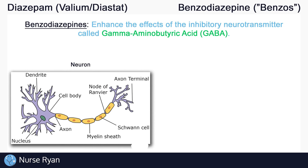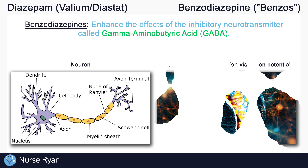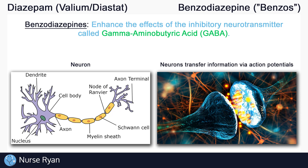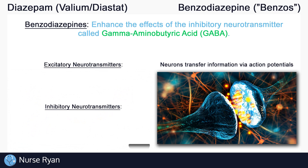In our body we have neurons that transfer information throughout the entire brain and body, and the way that this information gets from neuron to neuron is through electrical signals which we call action potentials. These action potentials are vital in the transfer of information throughout the body. We also have neurotransmitters which influence these action potentials.